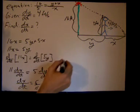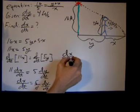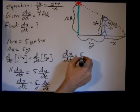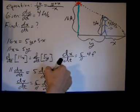I have a value for dy/dt, so I'll just plug it in, and we get dx/dt equals 5 over 11 times 4.